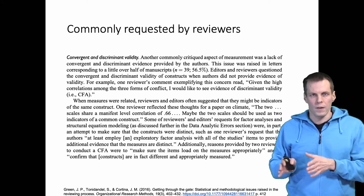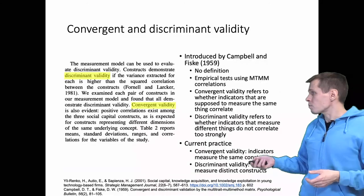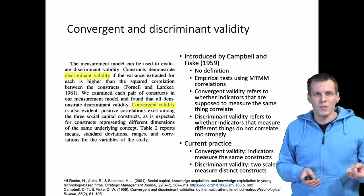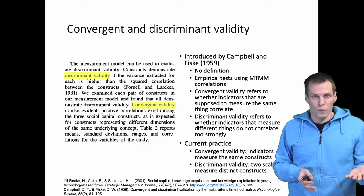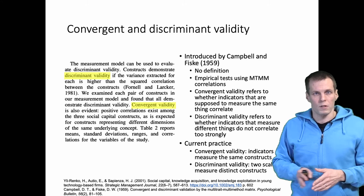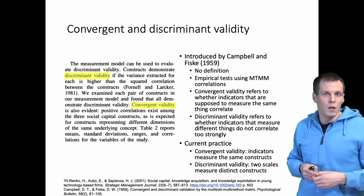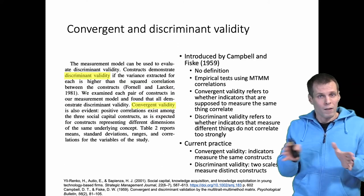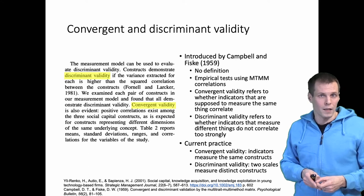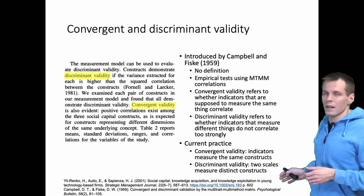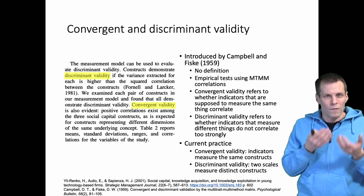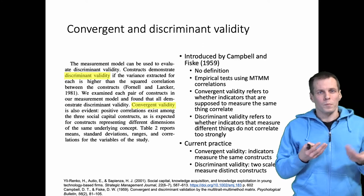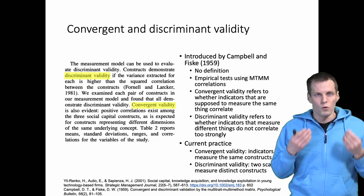In most applied research today, the original definitions are no longer used. The current practice is that convergent validity refers generally to the correlation between items supposed to measure the same thing, regardless of whether they are measured using the same or different methods. Discriminant validity has come to mean whether the correlation calculated from two scales is sufficiently low to conclude that the two scales measure two different constructs.